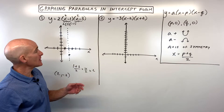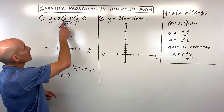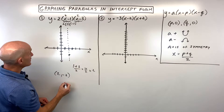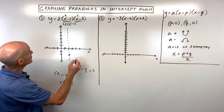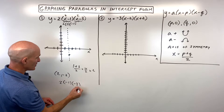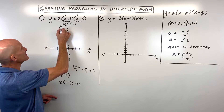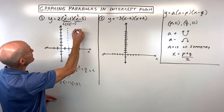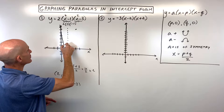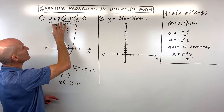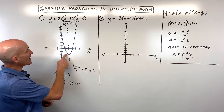For more points, we can find the y-intercept by plugging in zero: zero minus one is negative one, times two, and zero minus three is negative three, so that comes out to six. We can also plot the mirror image over the line of symmetry. The two is stretching the graph — since it's bigger than one, that's a vertical stretch.